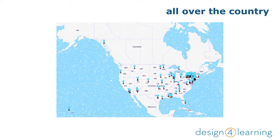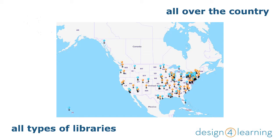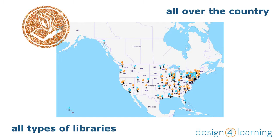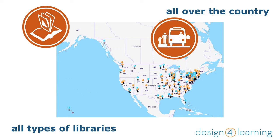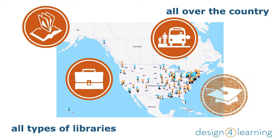Our first cohort began working in September 2015 and the second cohort began working in February 2016. They included participants from all over the country, from all types of libraries, subject specializations, and library experience levels. Based on their feedback about the program, we've made it even better.